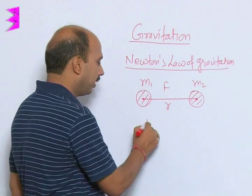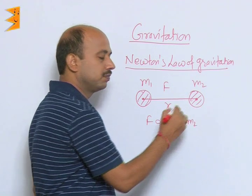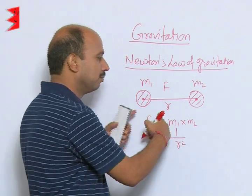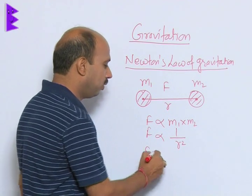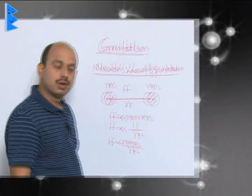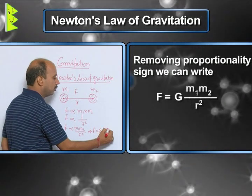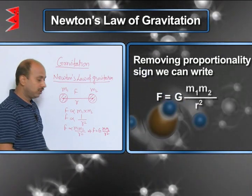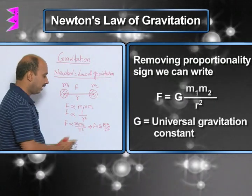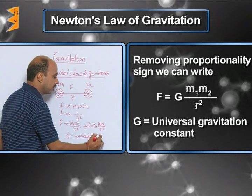According to Newton's Law of Gravitation, F is directly proportional to the product of the two masses m₁ and m₂, and F is inversely proportional to the square of the distance between them. So we can write F is equal to G·m₁·m₂ divided by r². We remove the proportionality symbol and write F = G·m₁·m₂/r², where G is the constant of proportionality, known as the Universal Gravitational Constant.